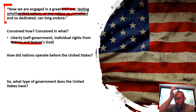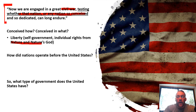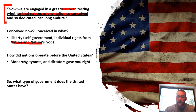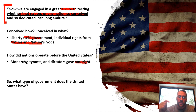Lincoln knows that this is important for the world because the world wants to see if liberty is possible. How did nations operate before the United States? Through monarchs, tyrants, and dictators who gave you your rights and told you what you could and couldn't do. The United States came along and said self-government is possible. If you want to know more about this, there's a whole PowerPoint on the Constitution covering the idea of positive rights and negative rights.